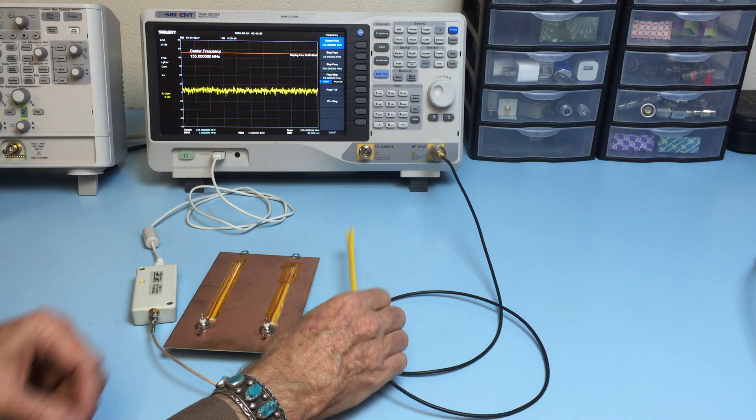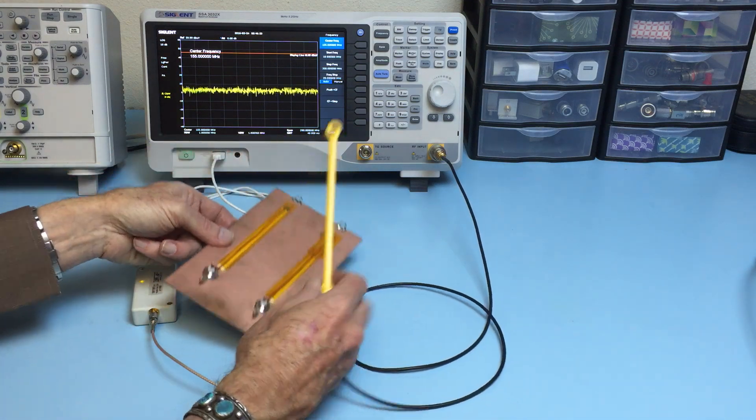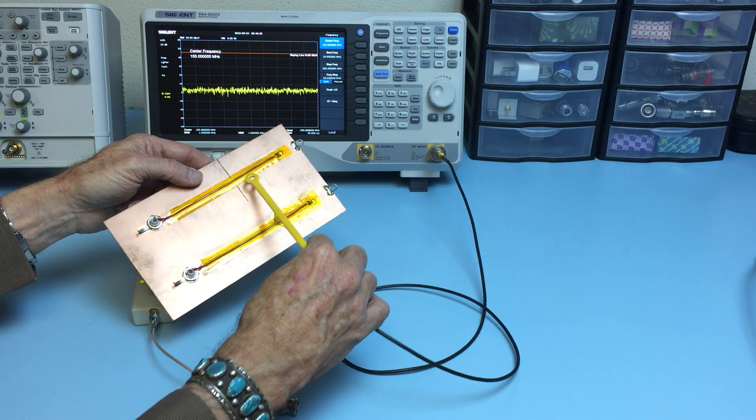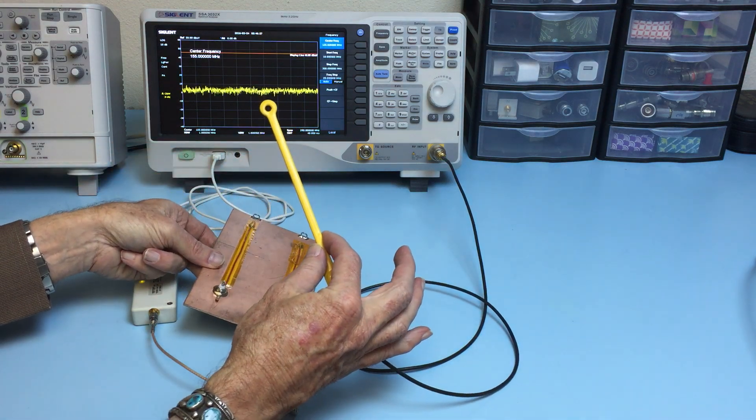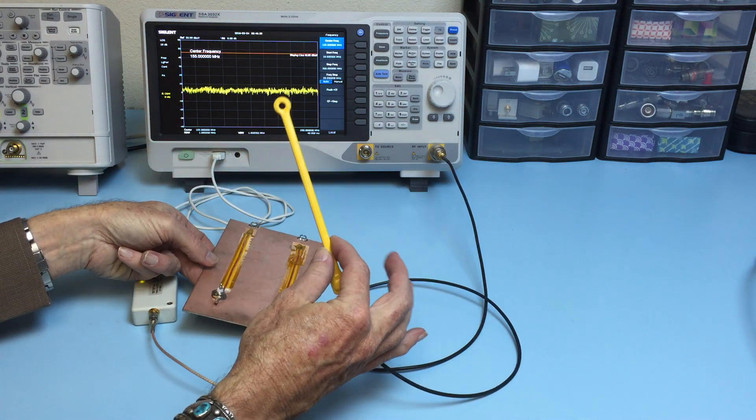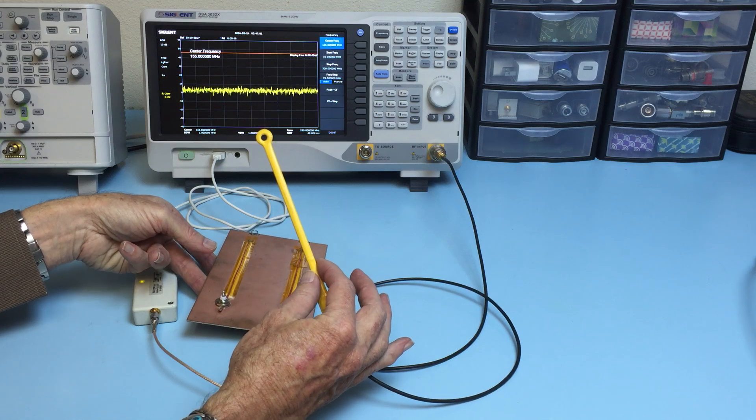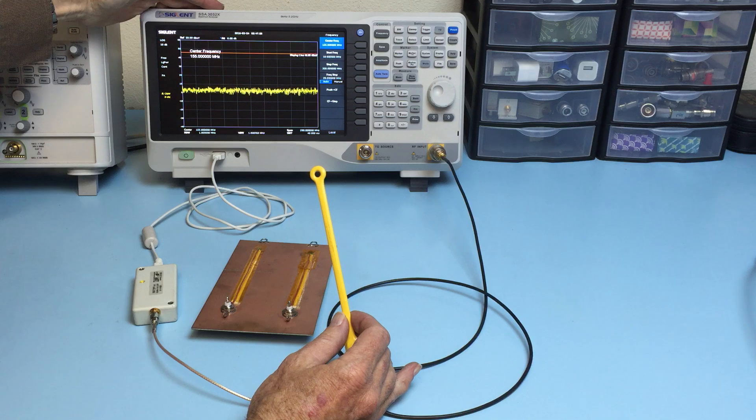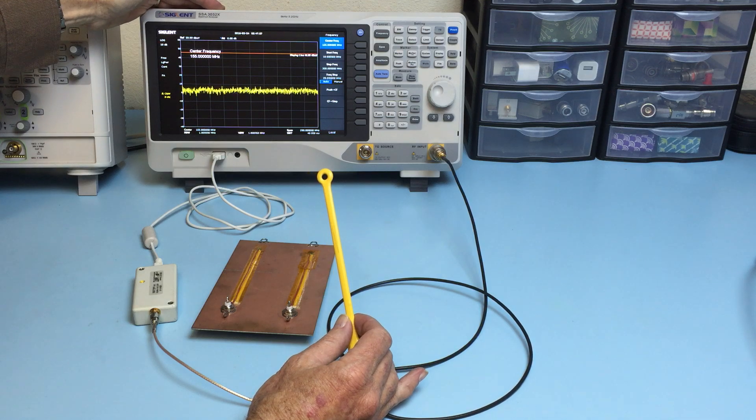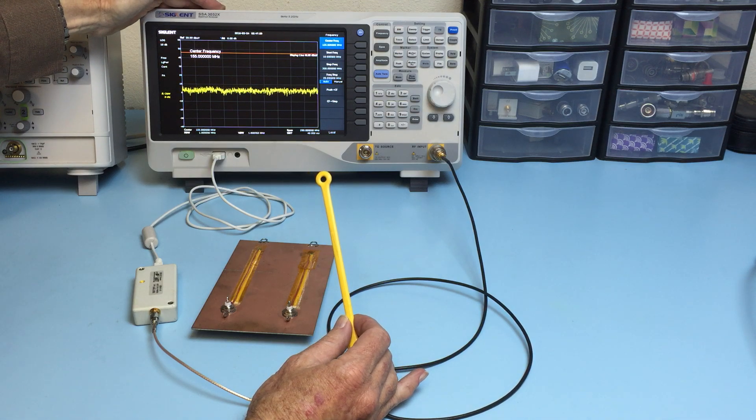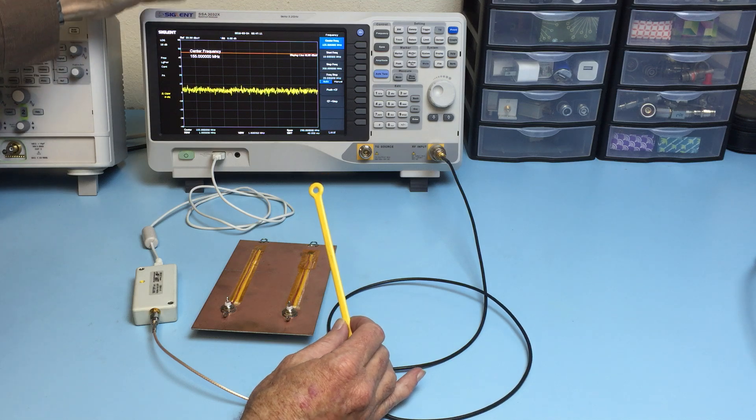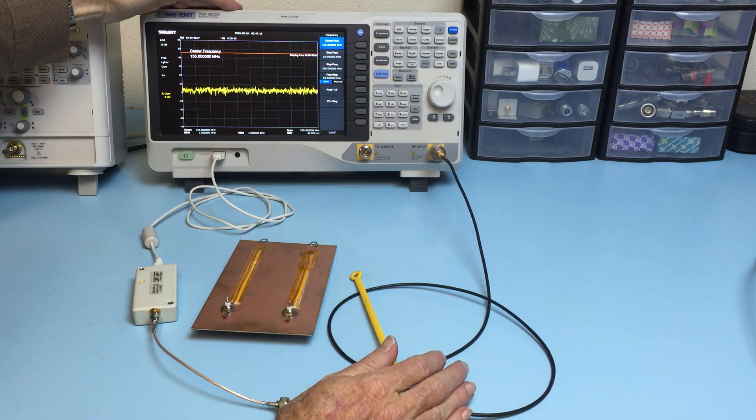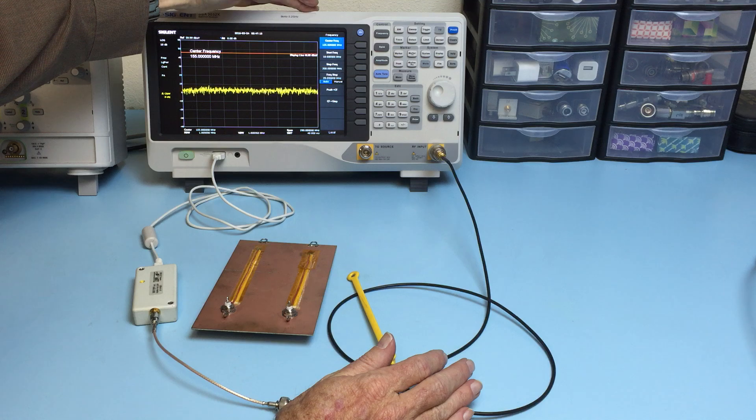We'll be receiving the harmonics through this beehive near field probe. This particular one is an H field probe, and this is connected to a SIGLANT SSA3032X spectrum analyzer. And we're looking from 10 megahertz to 300 megahertz.